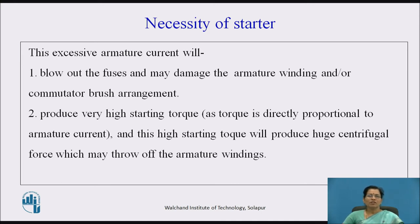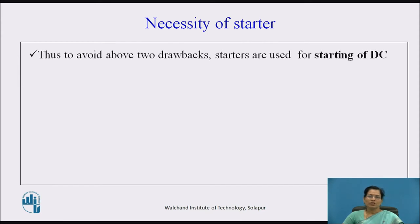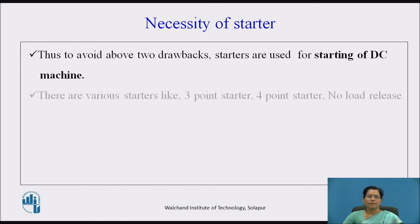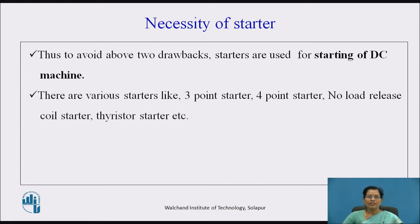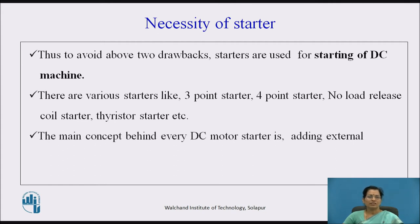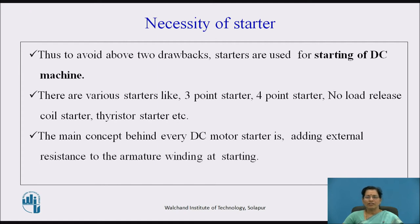High starting current produces very high starting torque, as torque is directly proportional to armature current, and this high starting torque will produce a huge centrifugal force which may throw off the armature winding. So starters avoid these two drawbacks and are used for starting of DC machines. There are various starters like 3-point starter, 4-point starter, no-load release coil starters, thyristor starters, etc. The main concept behind every DC motor starter is adding external resistance to the armature winding at starting.